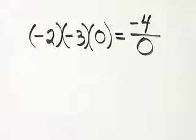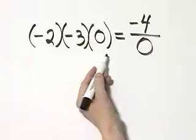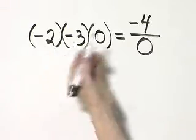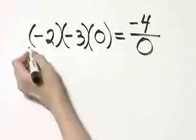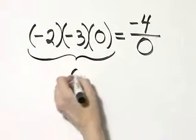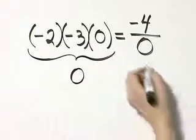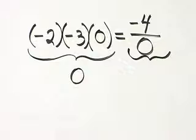Let's see if this statement is true or false. Let's simplify the left side, negative 2 times negative 3 times 0. This left side simplifies to 0. Now, be very careful. What about negative 4 divided by 0?